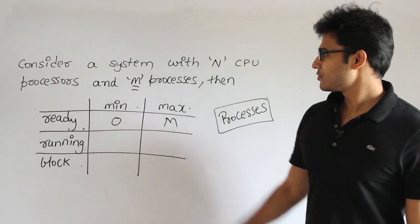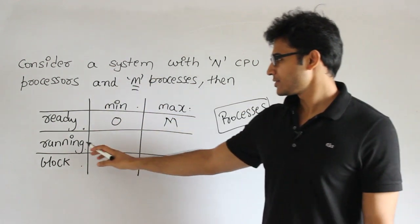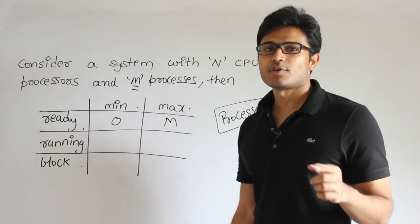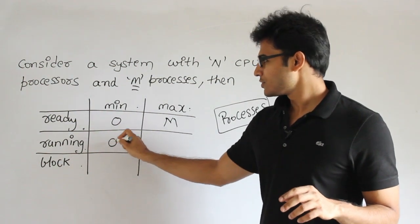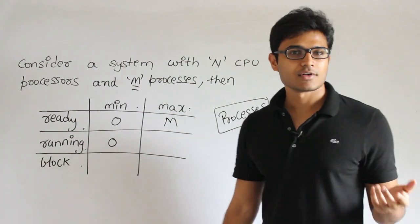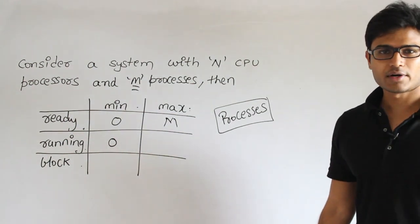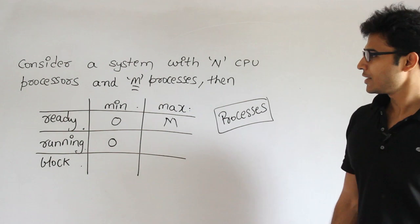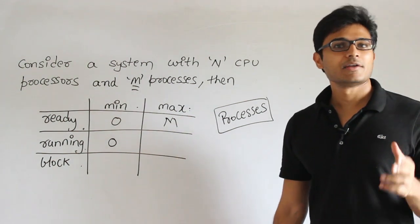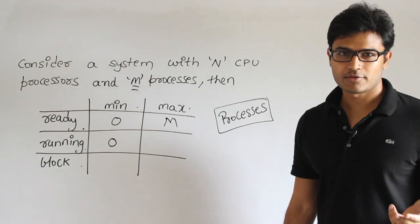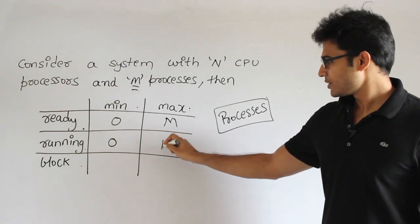For running state: minimum is zero, which means no process could be running because all of them got blocked. Maximum depends on the number of processors you have - if you have n processors, then the number of processes running is n.